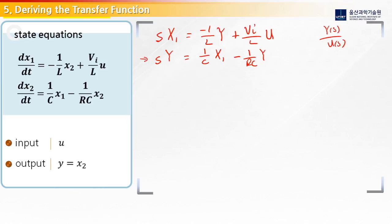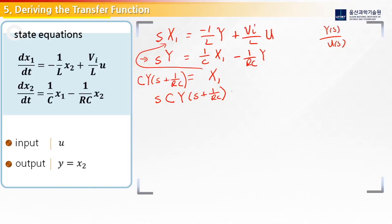So let's rearrange the second equation to write x1 by itself. If we rearrange, we get x1 equals C times s plus 1 over RC times y. Now we can take that and plug it back into our first equation. If we do that, we get s·C·y times s plus 1 over RC, equal to 1 over LC times y, plus Vin over L times u.